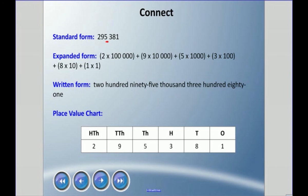We looked at written form - 295,381 - we didn't use the word 'and', bad, bad, and okay, and we did not use commas. We also use something called a place value chart.